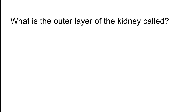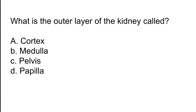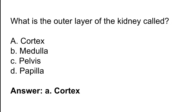What is the outer layer of the kidney called? Options: A) Cortex, B) Medulla, C) Pelvis, D) Papilla. The correct answer is option A. The outer layer of the kidney is called the cortex.